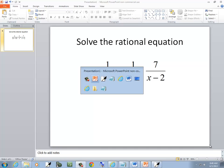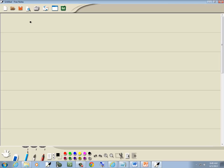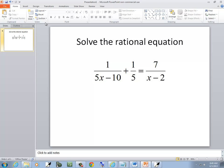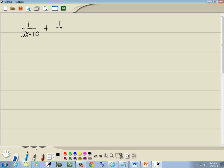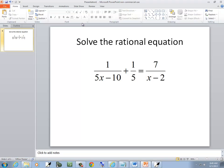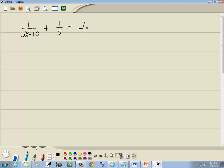Let's solve this rational equation: 1 over 5x minus 10 plus 1 fifth equals 7 over x minus 2. First step is to get rid of parentheses, don't have any. Second step is to get rid of fractions.